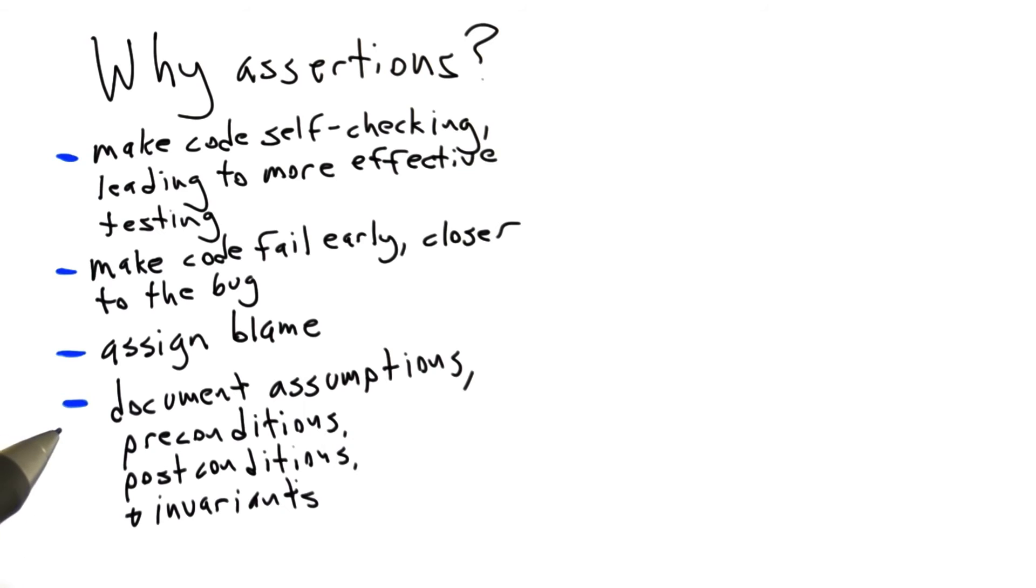And the final reason we like assertions is because they allow us to create executable documentation about assumptions we've made about preconditions in our code. And so by writing down executable checks on our preconditions, we not only get to check these preconditions when the code runs, but also we're documenting for other developers the things that need to be true for that code to execute correctly.